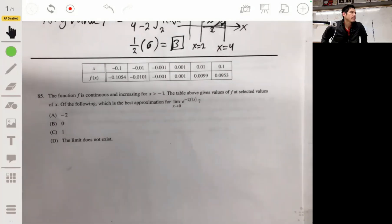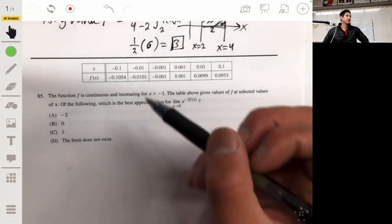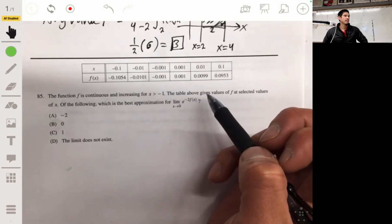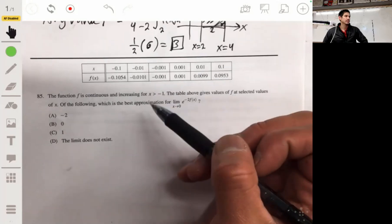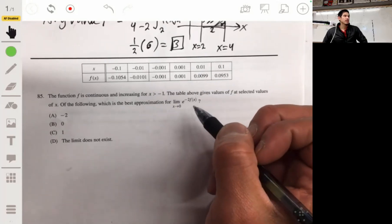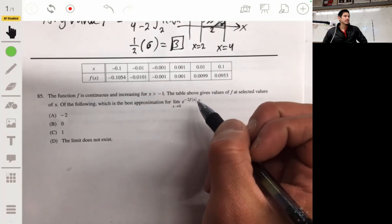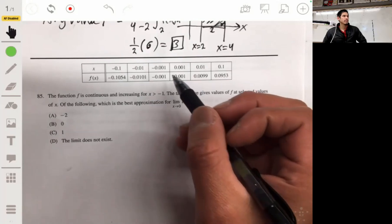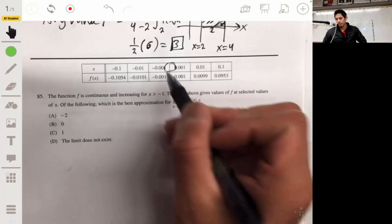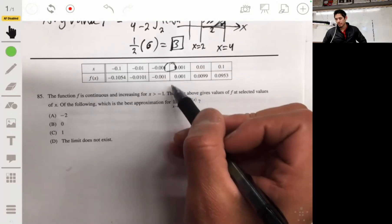For problem 85, the function f is continuous and increasing for x greater than negative 1. The table above gives values of f at selected values of x. Which is the best approximation for the limit as x goes to 0 of e to the negative 2f(x)? Okay, so as x goes to 0, it's somewhere in here.